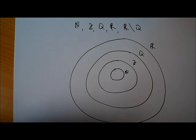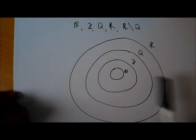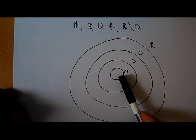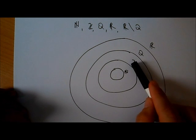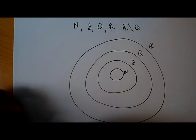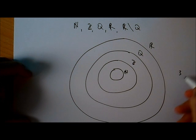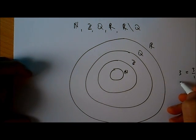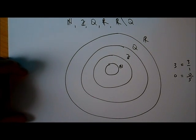Let's explain that. If you look at the natural number circle, that's inside the integer circle, and every natural number is an integer — that's the reason that the natural number set is inside the integer set. The integer set and the natural number set are both inside the fraction set, and that makes sense because every integer or every natural number can be written as a fraction. If I take the number 3, well 3 is equal to 3 over 1, which is a fraction. If I take 0, which is an integer, 0 is equal to 0 over 5, which is a fraction by the definition of a fraction, as we had in the previous video.